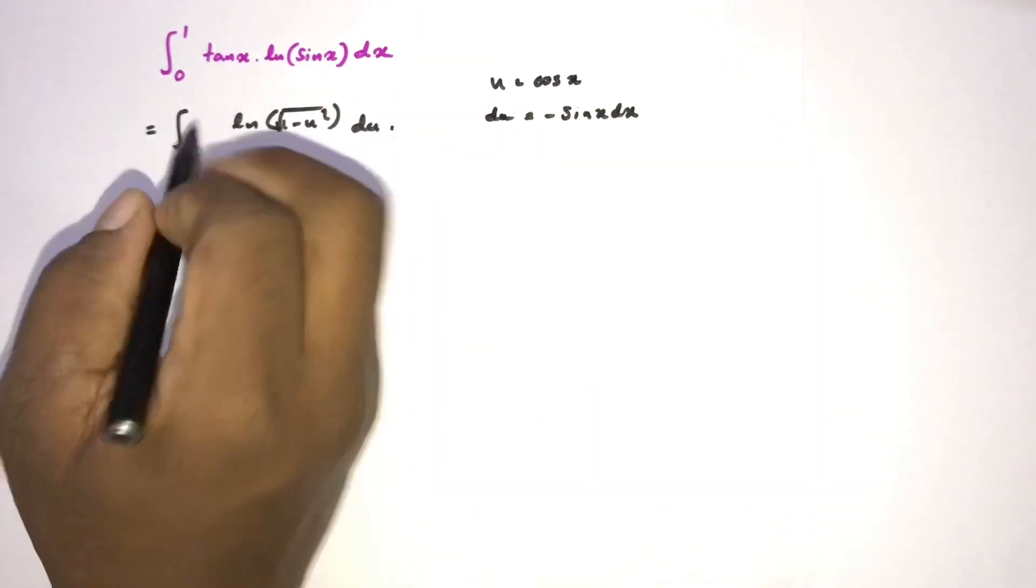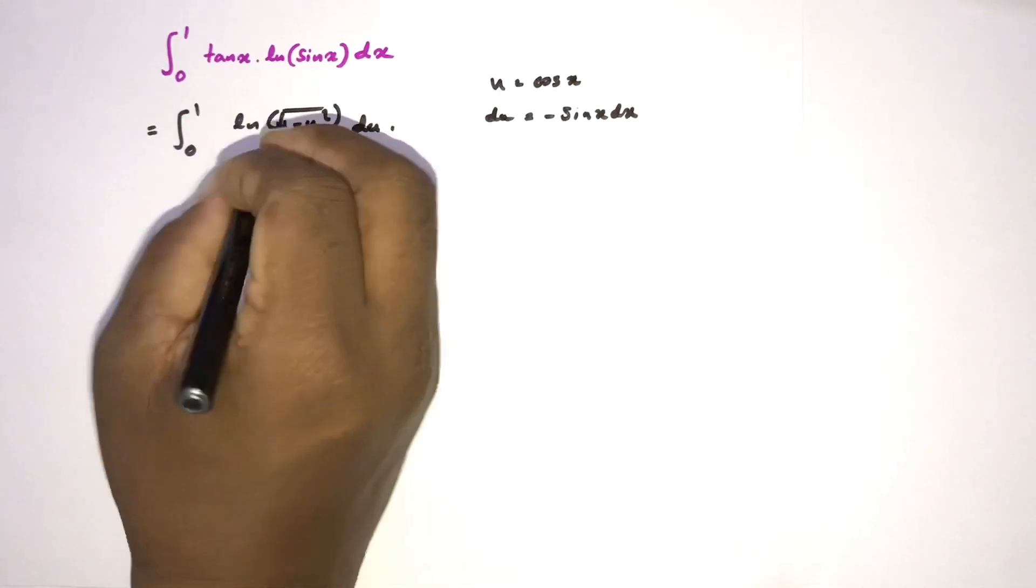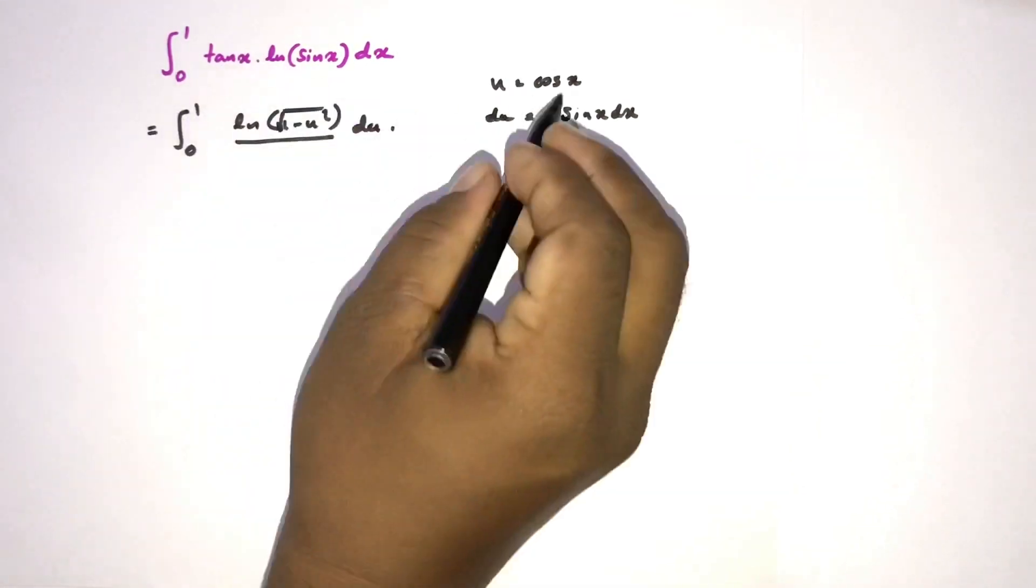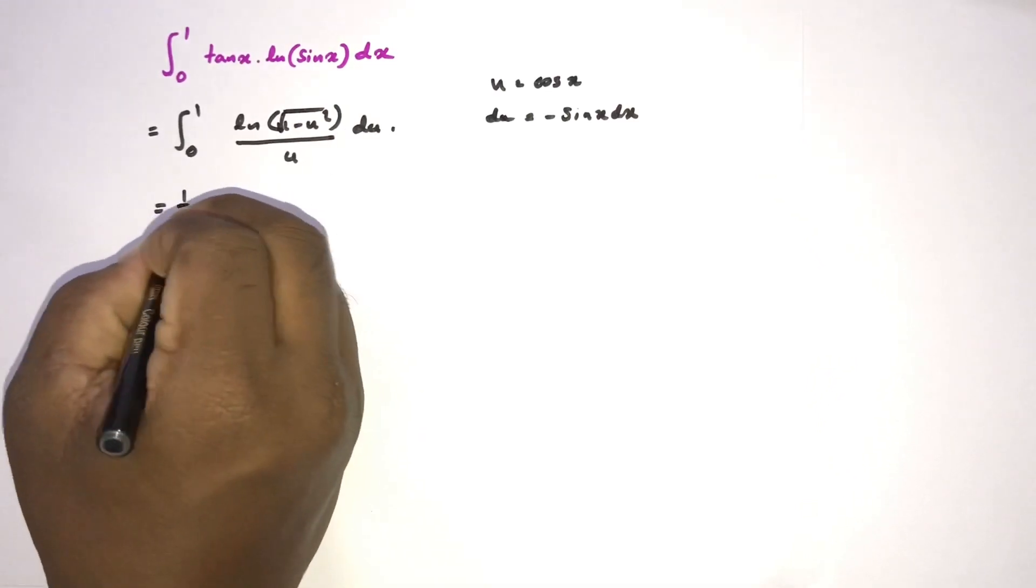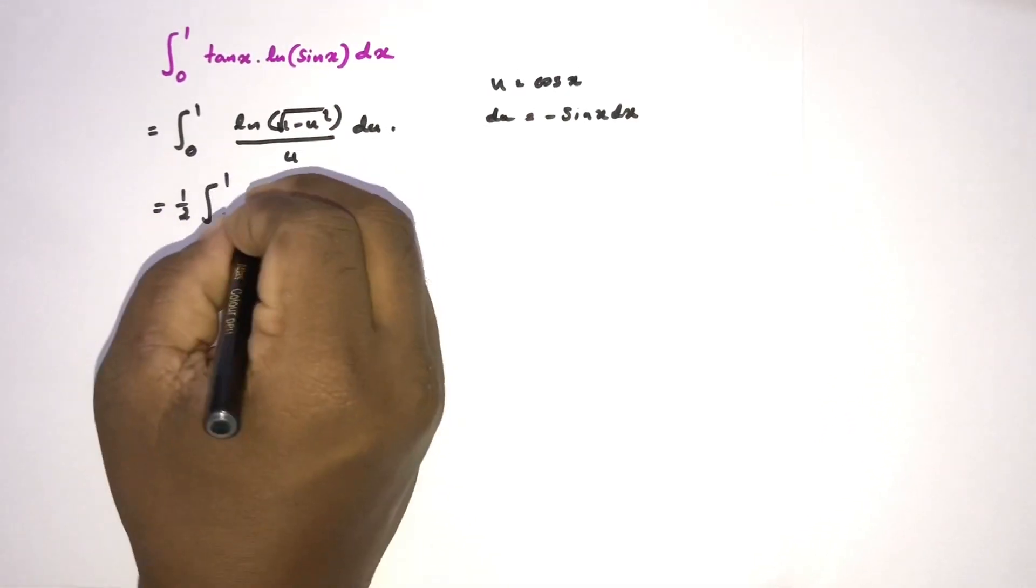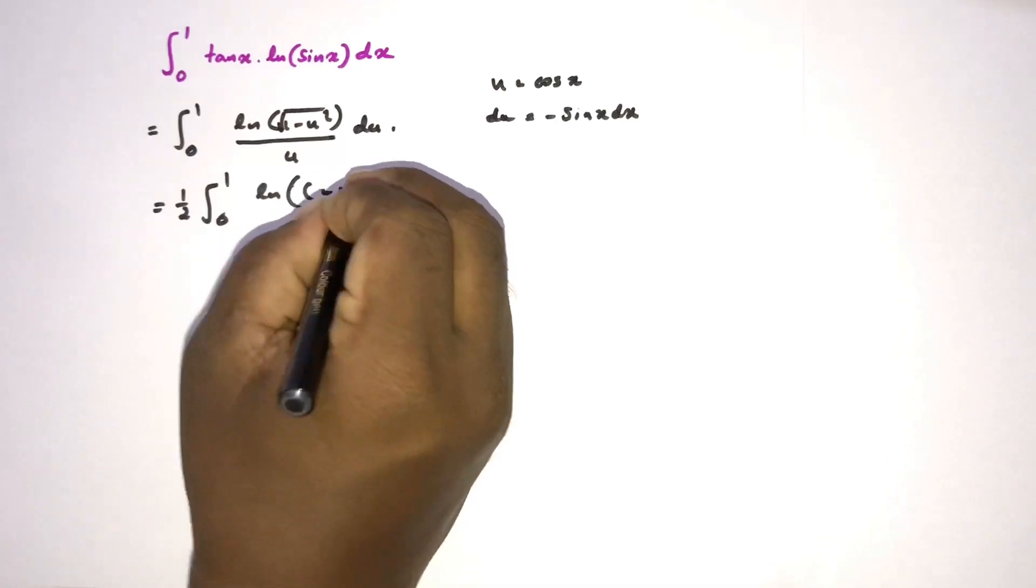Over cosine of x we know is u. Now here one half power, so we can write one half integral from zero to one, natural log of one minus u times one plus, difference of two squares, over u du.